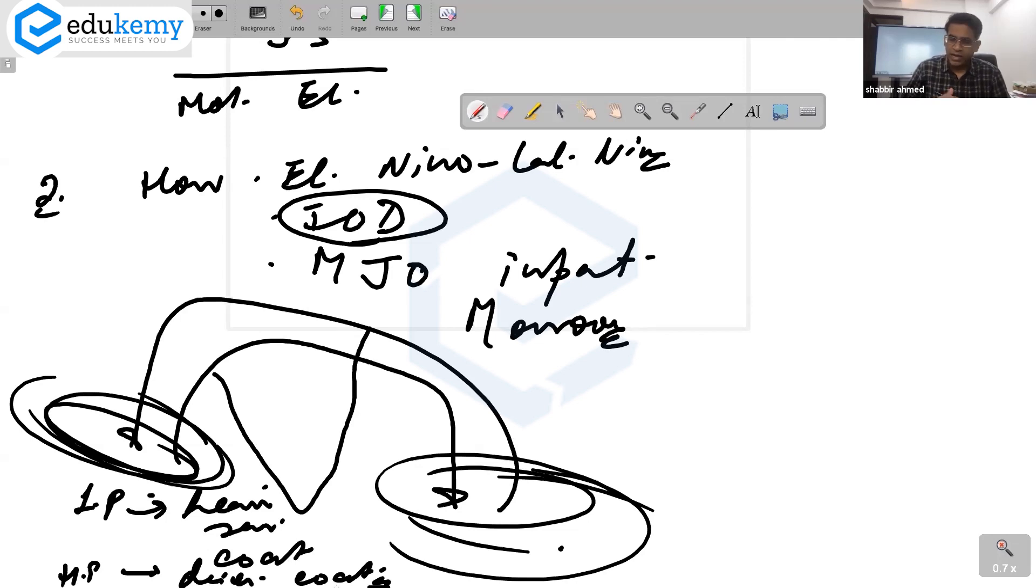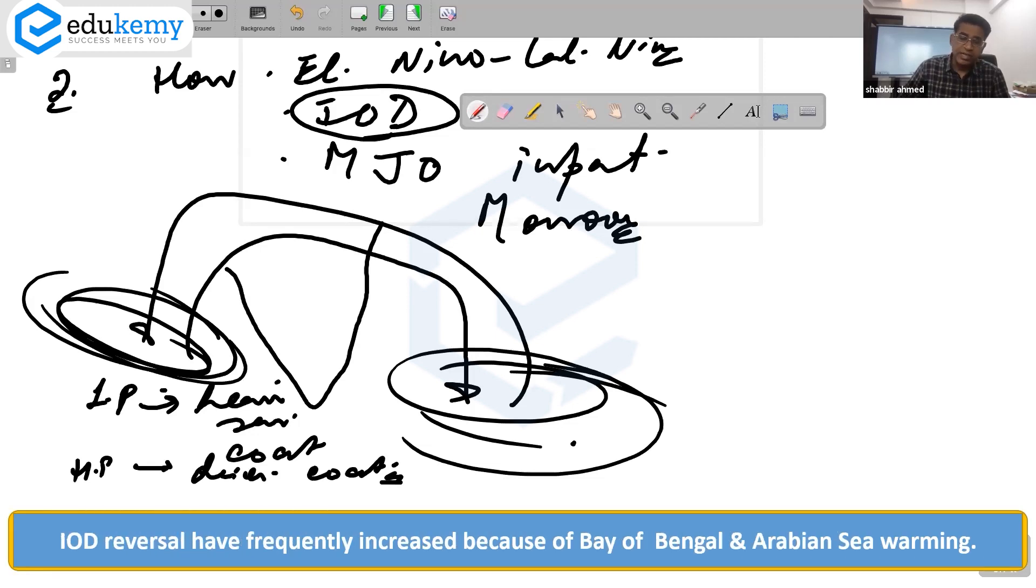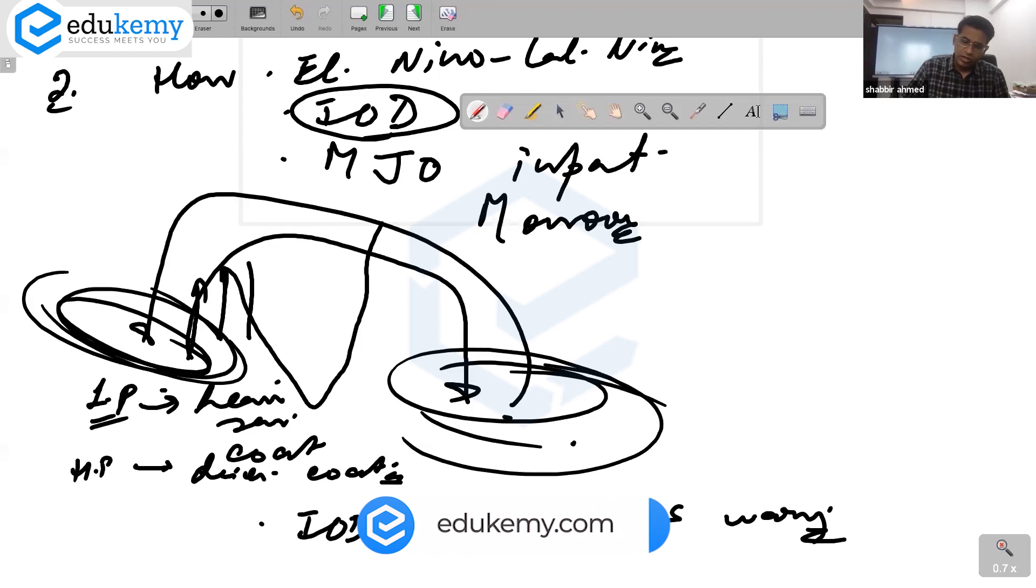This is a phenomenon. You can add a point here that Indian Ocean Dipole reversals have frequently increased because of Bay of Bengal and Arabian Sea warming. If it has low pressure, air is rising in this part here, so along the coast the areas can have heavy rainfall. And if it is high pressure, the sinking air along the coast will have relatively drier conditions.